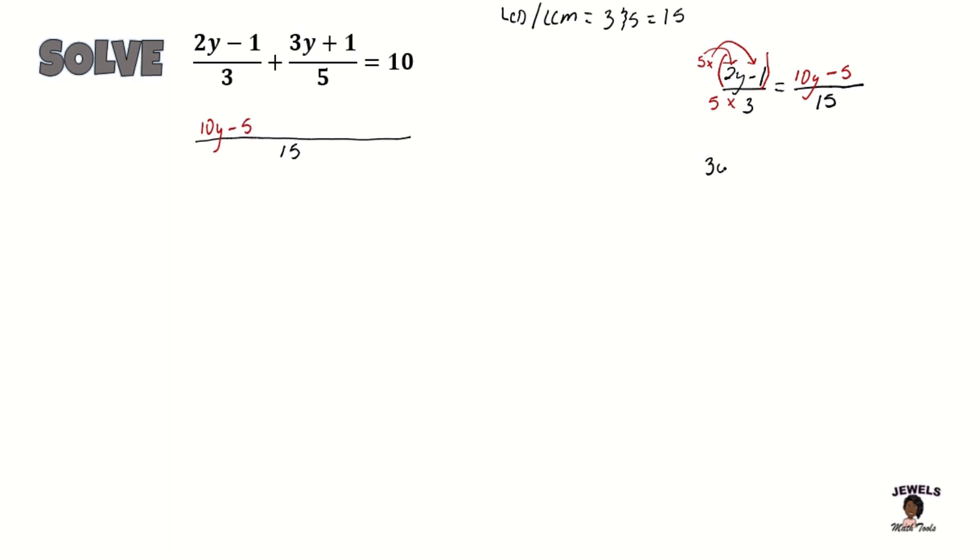And now we're going to be changing our 3y plus 1 all over 5 also to its equivalent form where it has 15 as its denominator. So we're looking for our number that when we multiply 5 by this one equal to 15. And we know that just like multiplying 3 by 5, we know that 3 times 5 is 15. So everything in my numerator will be multiplied by 3. So 3 times 3y will equal to 9y. 3 times 1 will equal to 3. So our second fraction in its equivalent form is equal to 9y plus 3.